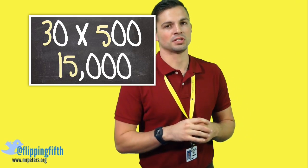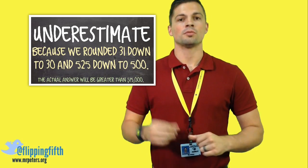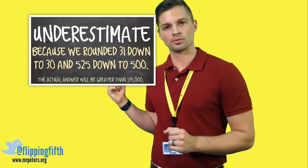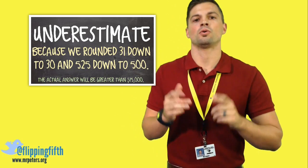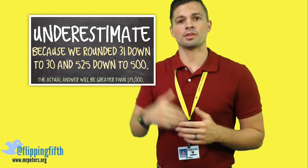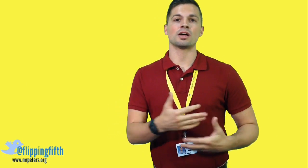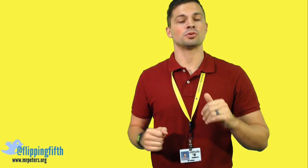15,000 is actually an underestimate, because we rounded 525 down to 500 and 31 down to 30. It's important to know we have an underestimate because when we find the exact answer, it should be greater than 15,000 — if it is not, we did something incorrectly. That is the logic behind finding the overestimate and underestimate. You could also find the overestimate by rounding 525 up to 600 and 31 up to 40, and the exact answer should fall between those two numbers.